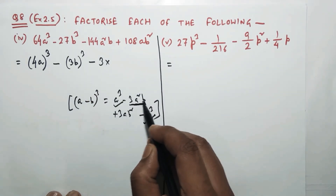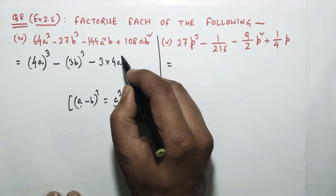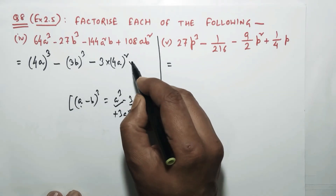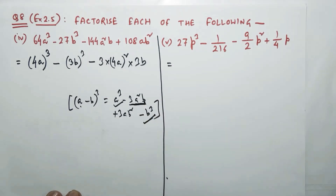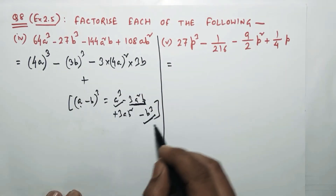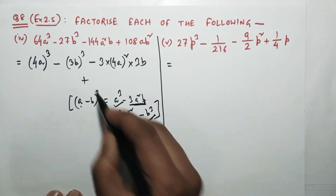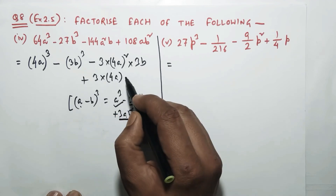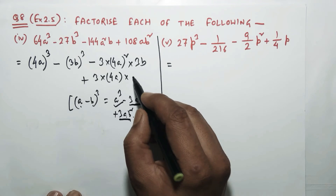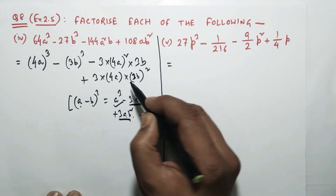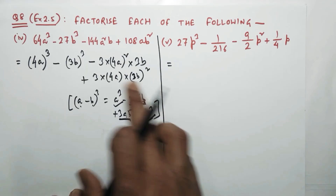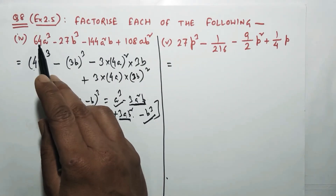For the minus 3a²b term, a is the first term which is 4a, and b is the second term which is 3b. So minus 3×(4a)²×(3b). Then plus 3ab²: a means the first term 4a, b² means the second term (3b)². After putting into the formula, you check whether these terms match with the previous line.